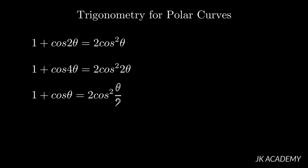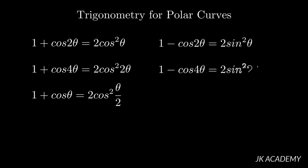Now we look at the same formula with a minus: 1 minus cos 2 theta is equal to 2 sine squared theta. Everything remains the same, but the trigonometric function changes from cos to sine, and the addition symbol on the LHS becomes minus. So 1 minus cos 4 theta equals 2 sine squared 2 theta, and 1 minus cos theta equals 2 sine squared (theta by 2).